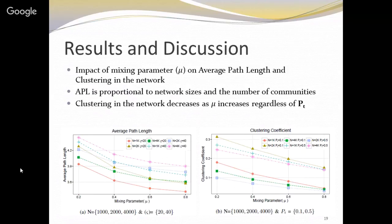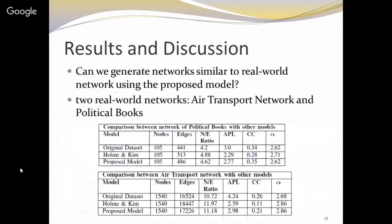Regarding the mixing parameter and clustering coefficient relationship: as we increase the mixing parameter, the clustering coefficient is reduced. This is because with a higher mixing parameter we are connecting to neighbors of other communities, so there are fewer dense components. This is very expected behavior.